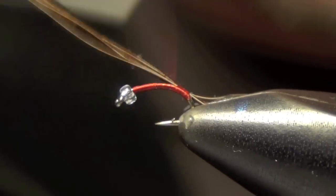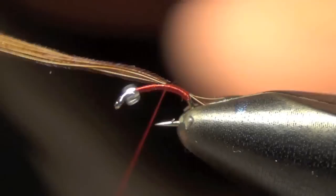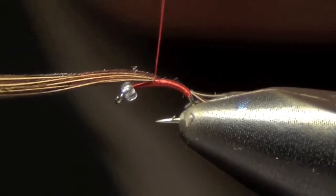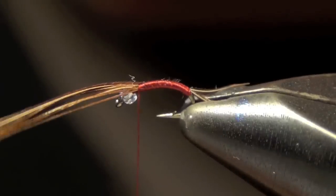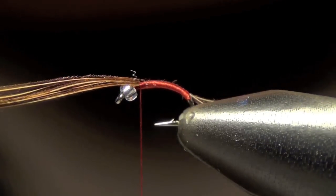Then I secure those down and I wrap that pheasant tail forward. The reason I'm wrapping this pheasant tail forward is not only to secure it, but also give it a nice, smooth, clean body.